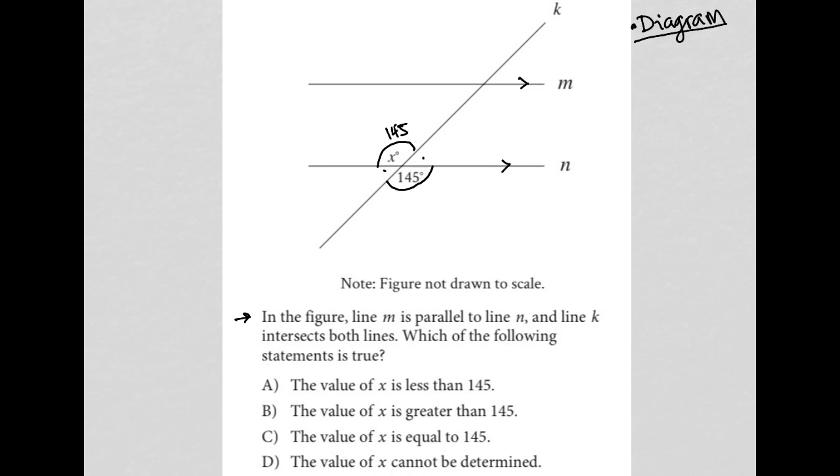Which of the following statements is true? Well, let's see. The value of x is less than 145. Well, that's not true because the value of x actually equals 145. Choice B, the value of x is greater than 145. No. Choice C, the value of x is equal to 145. Yes, absolutely. And D must be incorrect. The value of x cannot be determined. Yes, it can.